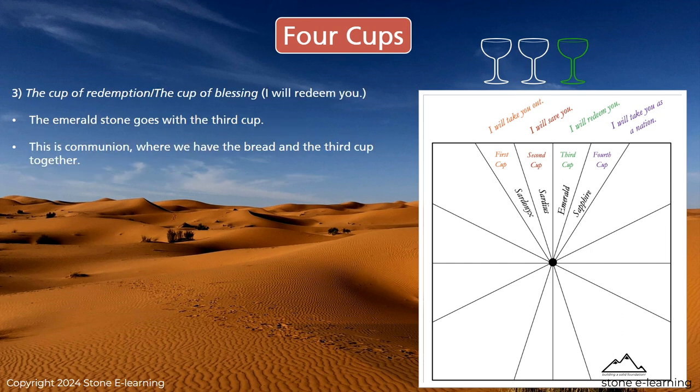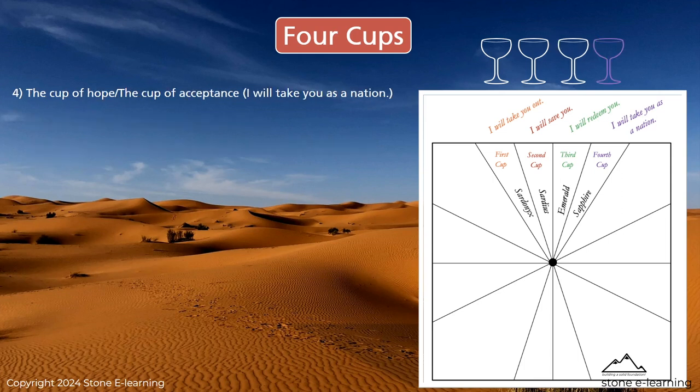The third cup is the cup of redemption, or the cup of blessing: 'I will redeem you.' The emerald stone goes with the third cup. This is communion, where we have the bread and the third cup together. The fourth cup is the cup of hope, the cup of acceptance: 'I will take you as a nation.'